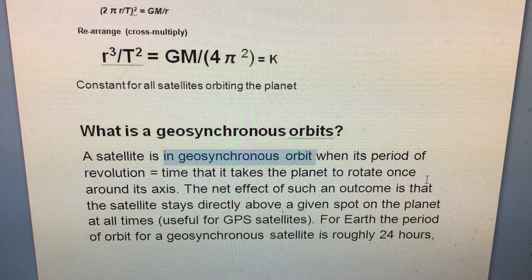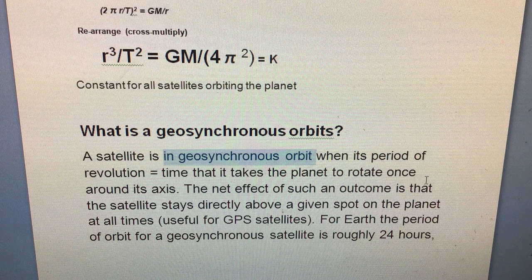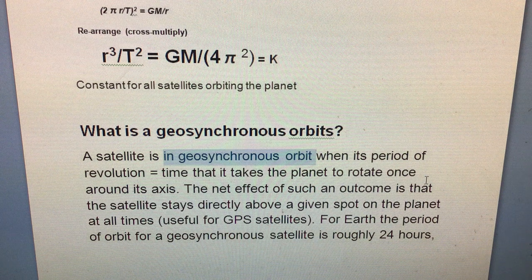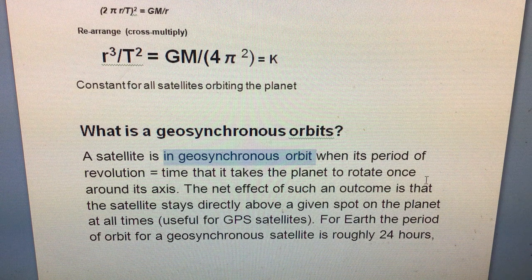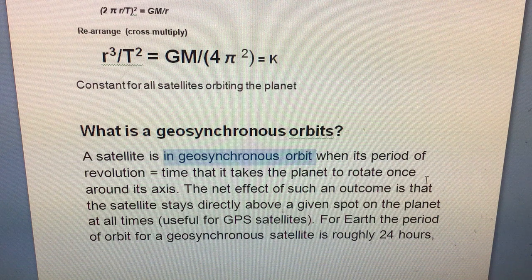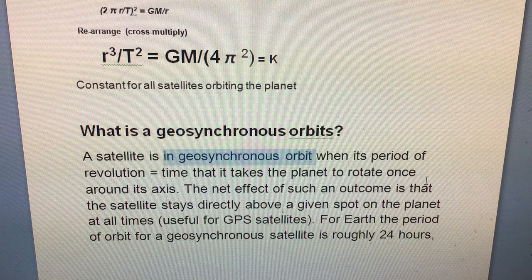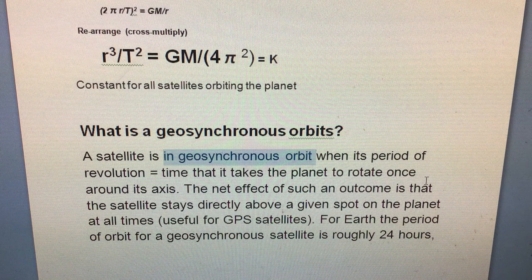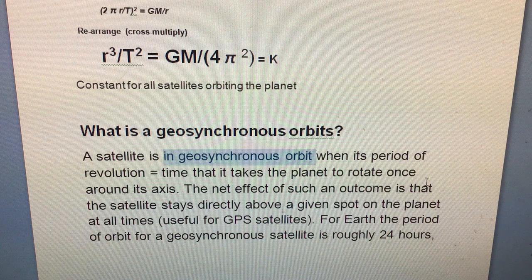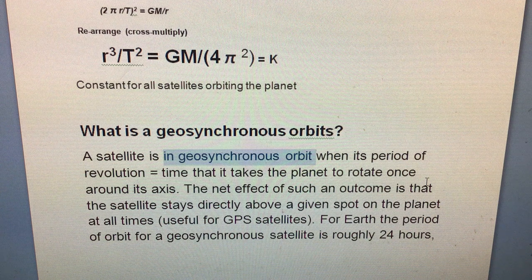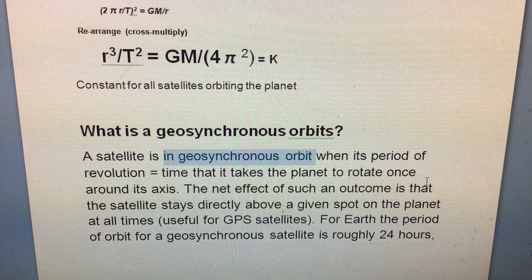So it takes the satellite 24 hours to go around the Earth. The Earth rotates once every 24 hours around its axis, roughly speaking. And so the net effect of such an outcome is that the satellite stays directly above a given spot on the planet at all times. So if you place the satellite above New York, it stays above New York. And this is indeed very useful for GPS satellites where you need to make use of these stable satellite positions for triangulation and things of this idea.